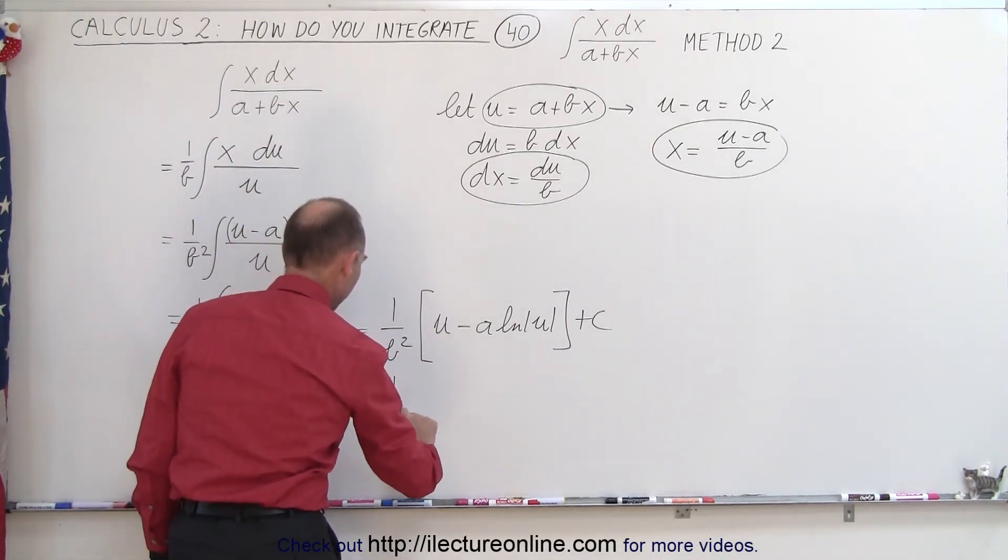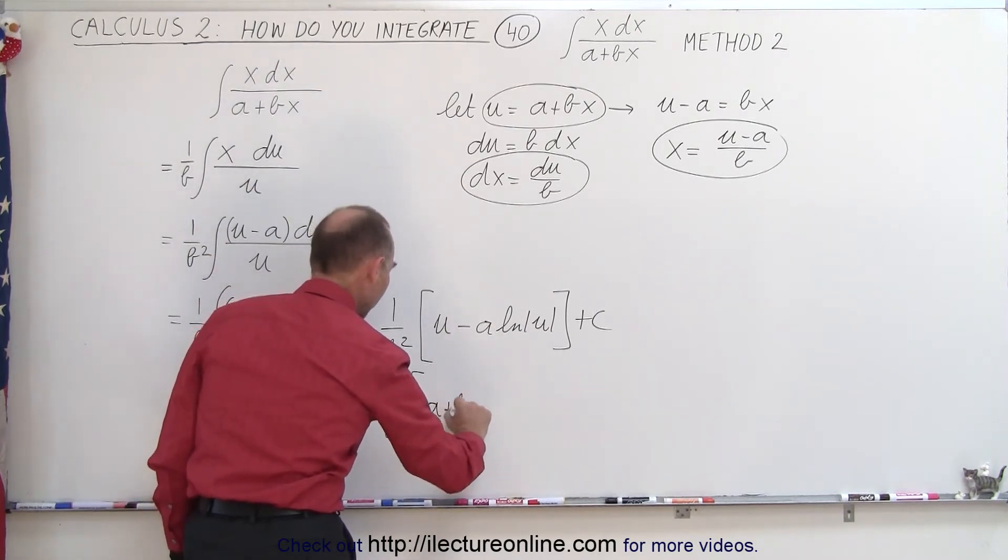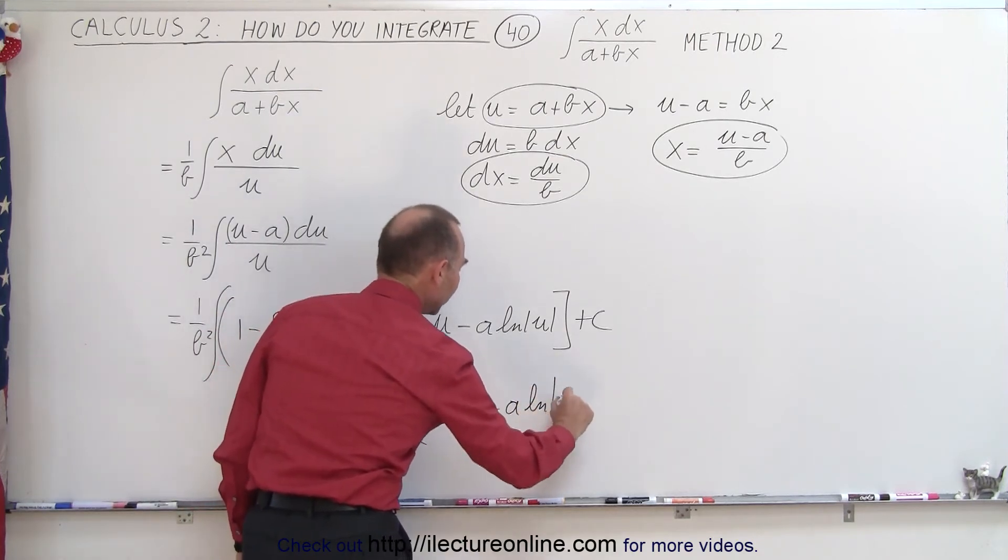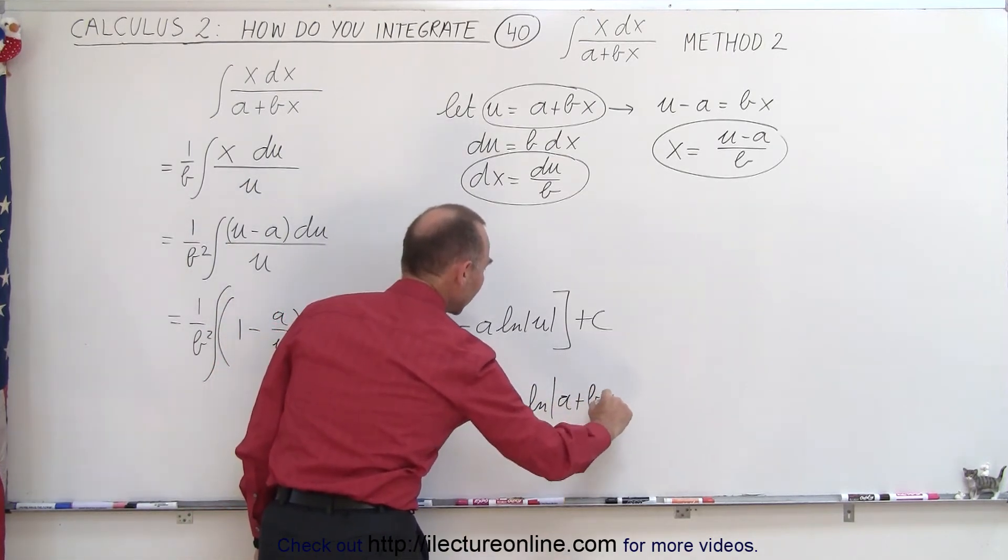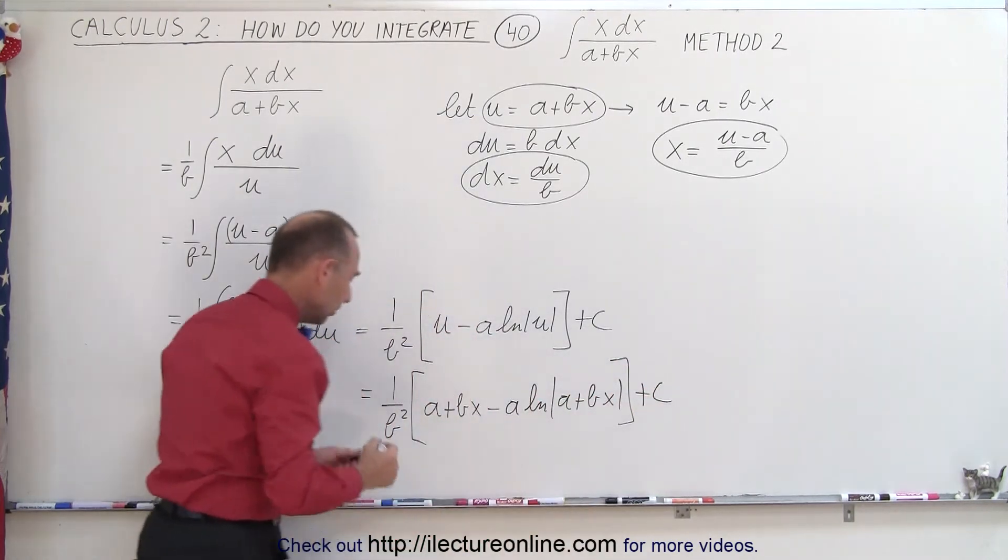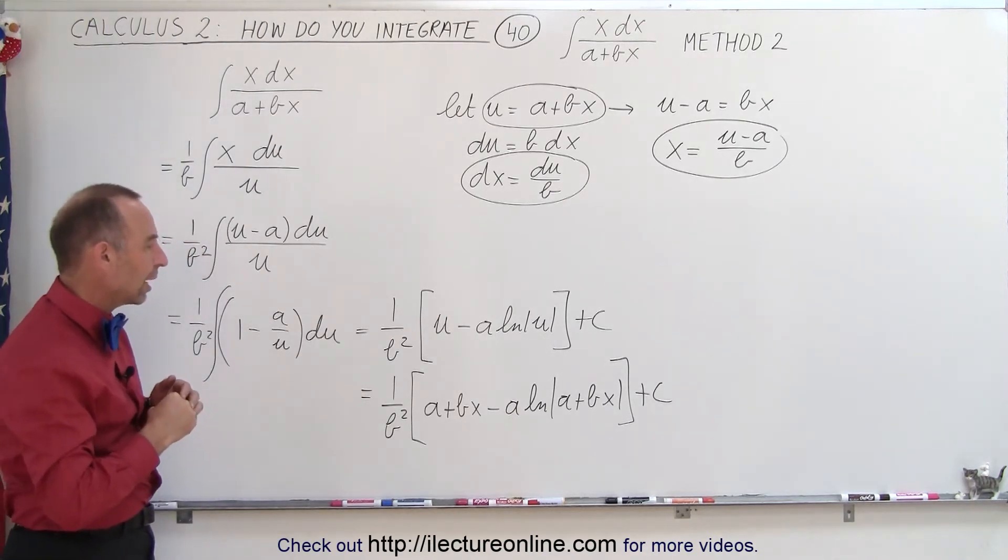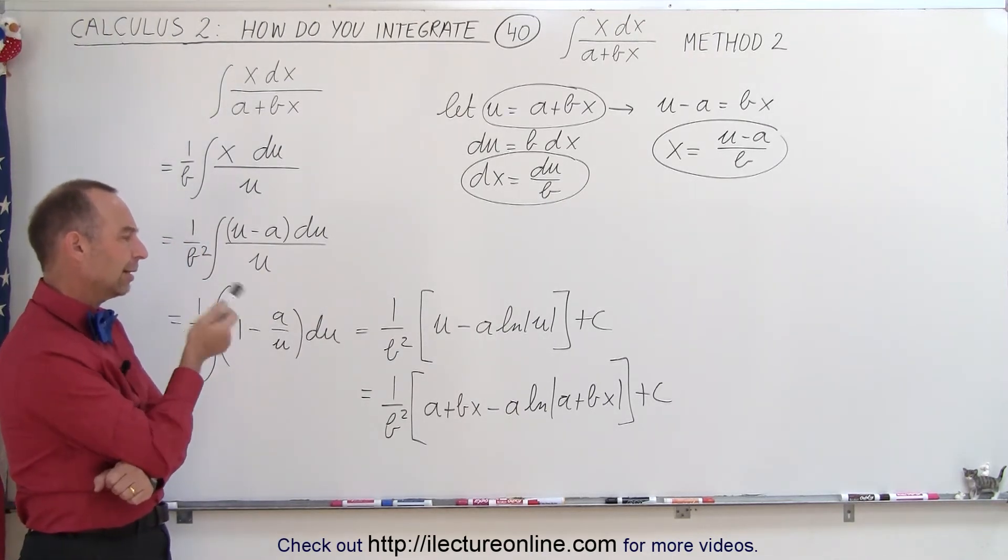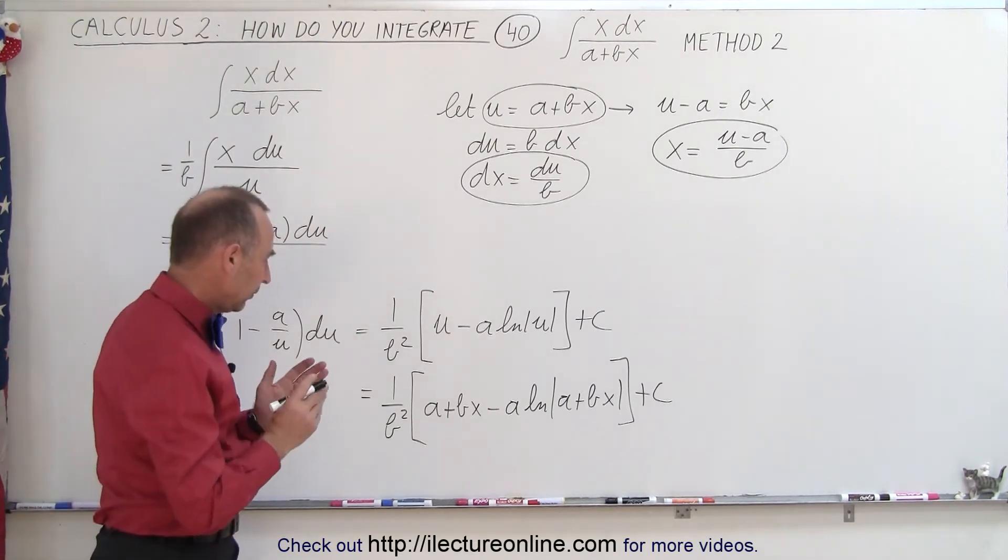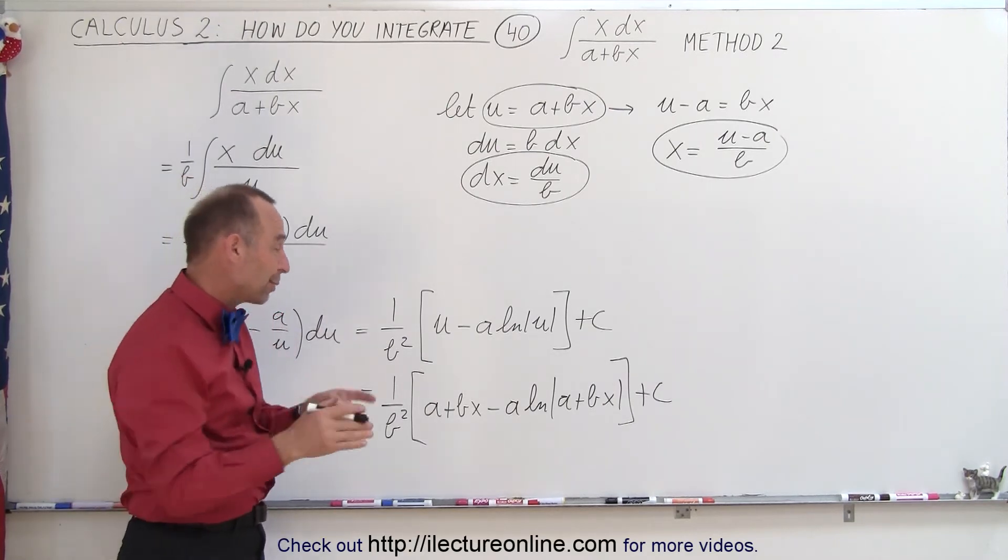This is 1 over b squared times u which is a plus bx minus a times the natural log of a plus bx plus a constant of integration. And notice that's the very same result that we got before. I say wait a minute, that doesn't look exactly like what we had before.